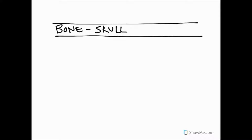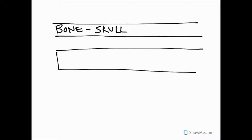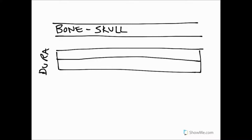The skull is our outer surface and our next layer down is going to be our dura mater, which is our first layer of the meninges. Inside the skull, the dura splits into two layers: one is called the endosteal layer (EL) and the innermost layer is called the meningeal layer. Those two layers have particular significance which we'll come back and revisit later on.